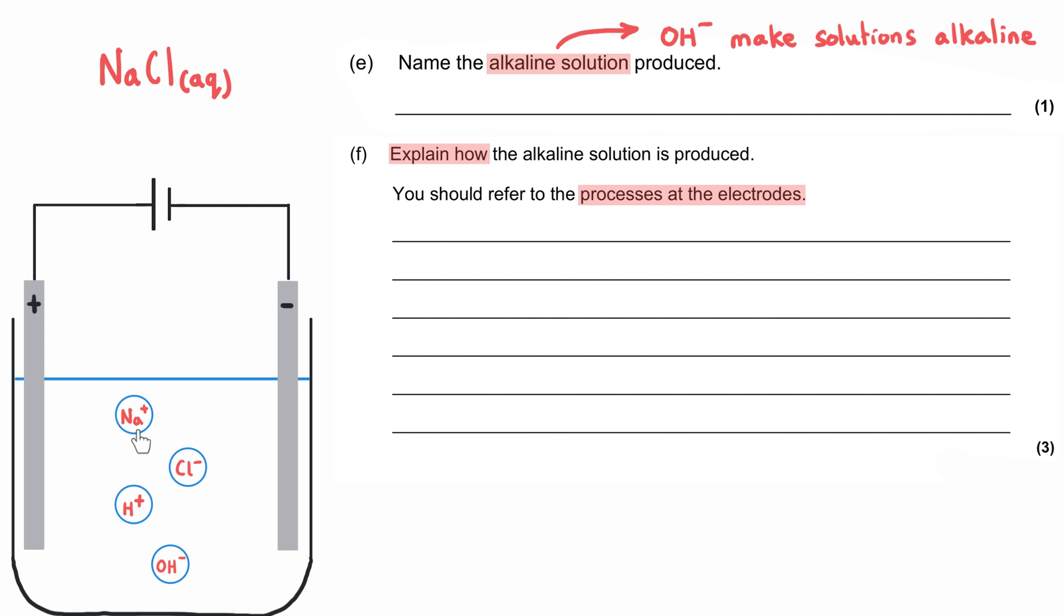We've got sodium ions and chloride ions, hydrogen ions and hydroxide ions. Two positive ions and two negative ions. Only one positive ion will be discharged at the negative electrode, and only one negative ion discharged at the positive. You need to remember the rules for working out which ion is discharged. At the negative electrode, the positive ion from the less reactive element is the one that is discharged.